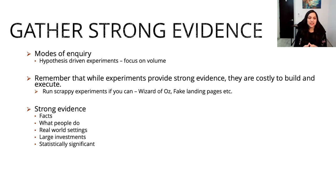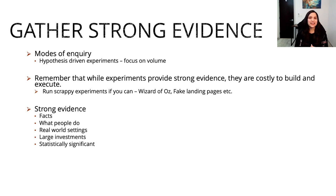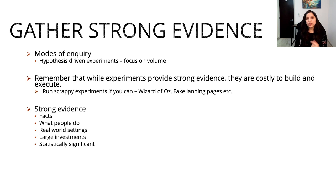Then move on to gathering strong evidence for the hypotheses you picked. Strong evidence is usually significant in volume — it consists of facts, real-world settings, and what people actually do instead of their beliefs and opinions. One way to gather strong evidence is by actually building experiments to test your hypotheses in the real world. Remember that building experiments is costly, so be careful. If you can, start with scrappy experiments that give you the information you need to proceed, and then take the next step. This isn't always possible depending on your product or organization, but try when you can.